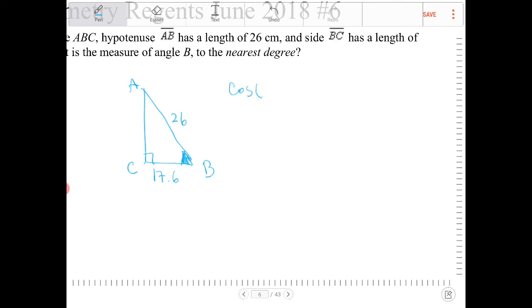That gives me a cosine ratio. Cosine of angle B equals 17.6 over 26. To figure out the angle, we take the inverse cosine of both sides.